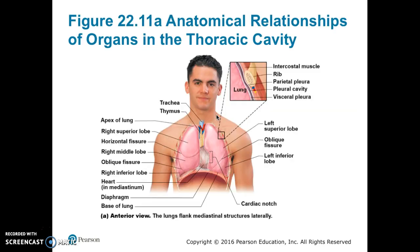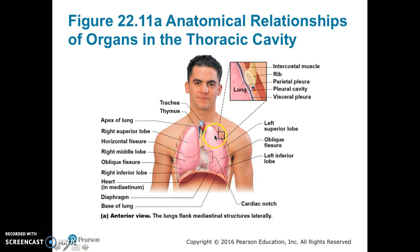Figure 22.11a shows the anatomical relationships of the organs in the thoracic cavity. You can see the rib cage creating the lateral borders of the thoracic cavity, where the lungs are just medial to it — ribs here, lung here, ribs here, lungs here.